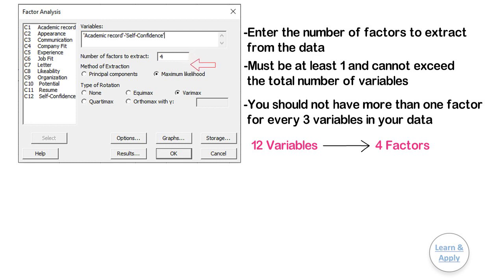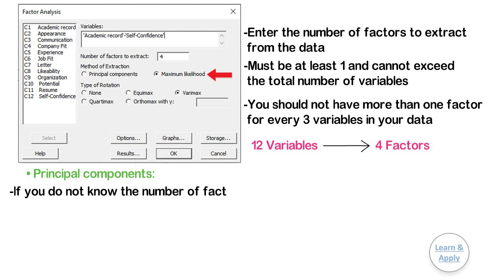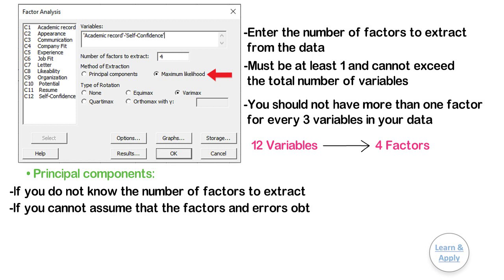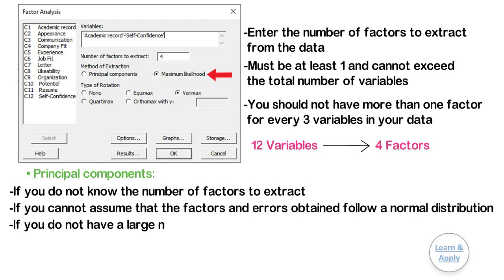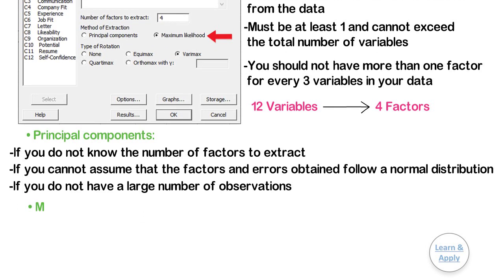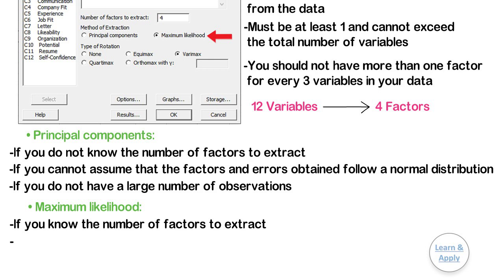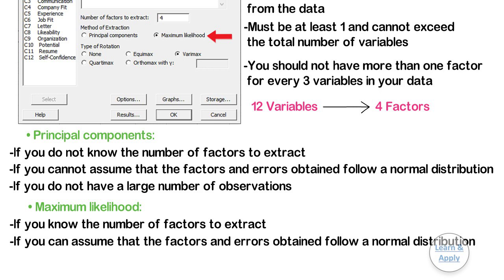Step 5: Under Method of Extraction, select Maximum Likelihood. Select the correct method to extract the factors. For Principal Components, select this option if you do not know the number of factors to extract, or if you cannot assume that the factors and errors follow a normal distribution, or you do not have a large number of observations. For Maximum Likelihood, select this option if you know the number of factors to extract, you can assume that the factors and errors follow a normal distribution, and you have a reasonably large dataset.